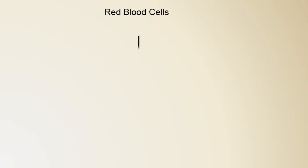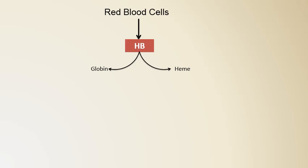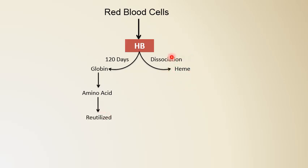RBCs have a lifespan of 120 days. Inside the RBC there is a protein called hemoglobin, which is composed of two parts: one is the non-protein part called heme, and the other is the protein part called globin. After 120 days, hemoglobin gets dissociated into globin and heme. The amino acids released from the globin part will be reutilized for globin chain synthesis.